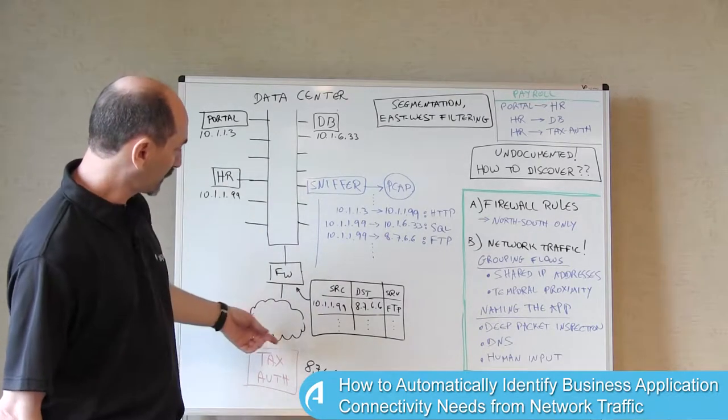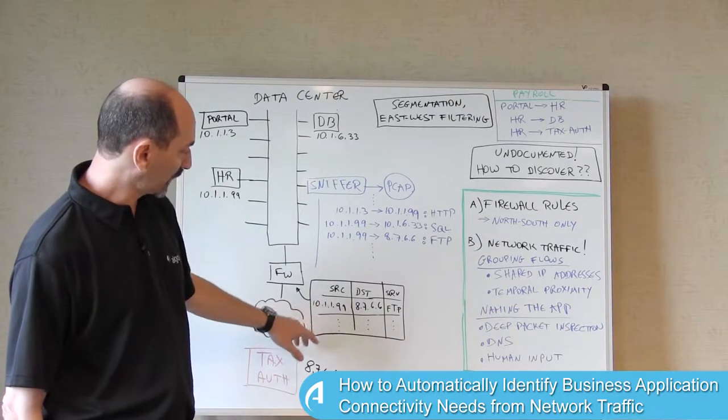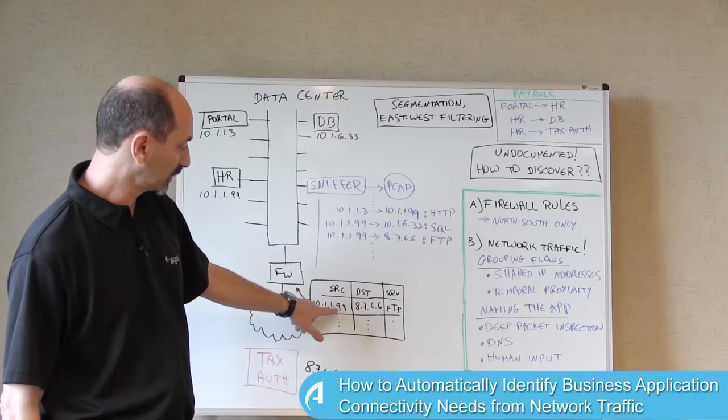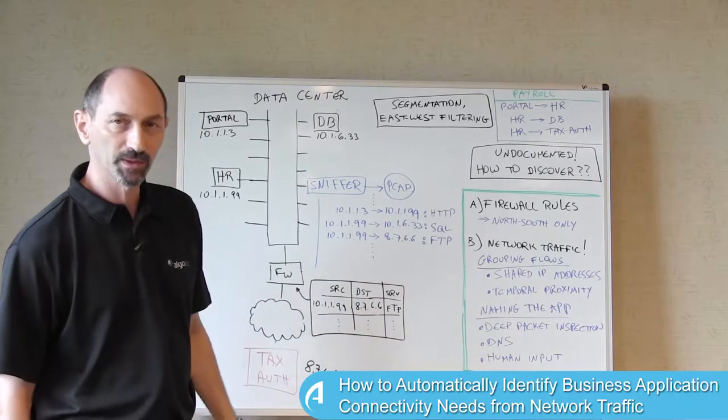So if you look at this example, you'll see that there is a rule in the firewall allowing connectivity from 10.1.1.99 to this external IP address.